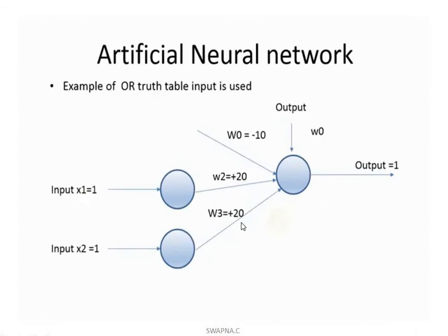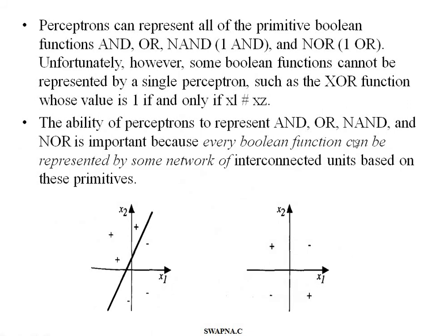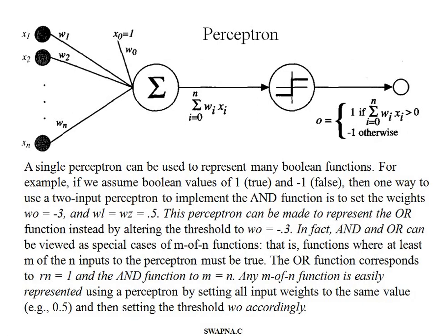For the OR function: whenever both inputs are 0 (Boolean false), we get output 0; otherwise, if at least one input is Boolean 1, we get output 1. AND, OR, NAND, and NOR functions can be represented with a single perceptron, but the XOR function cannot be represented with a single perceptron — multiple perceptrons are needed.